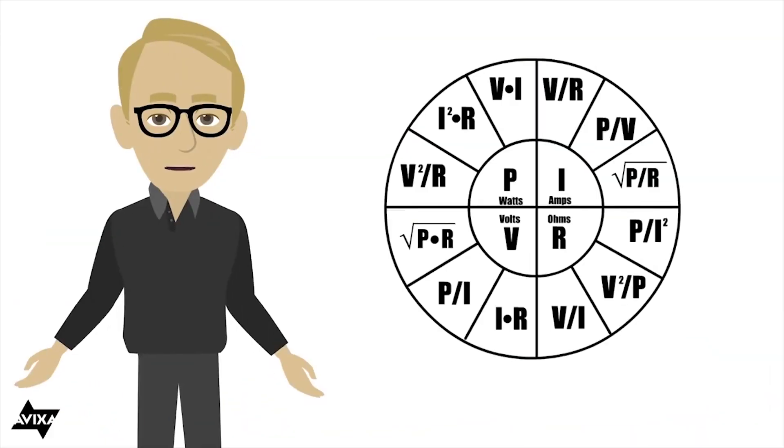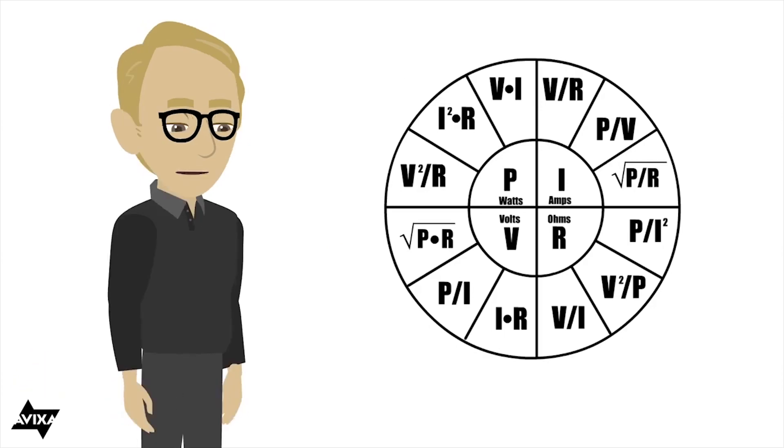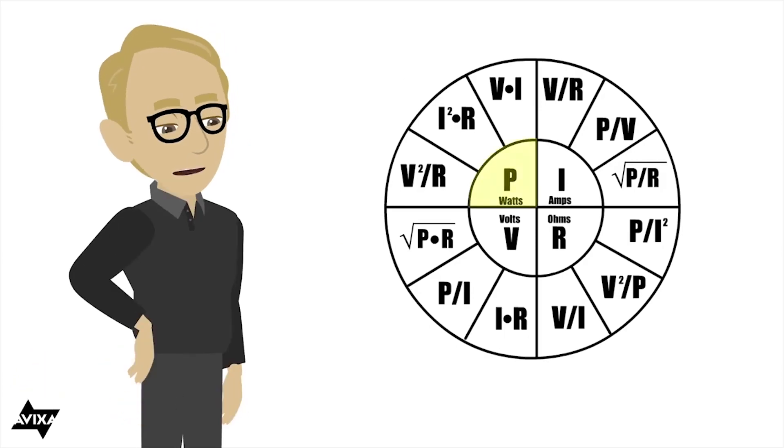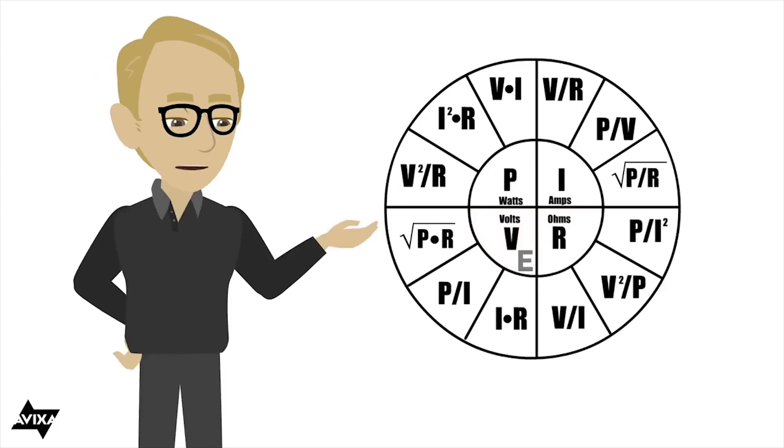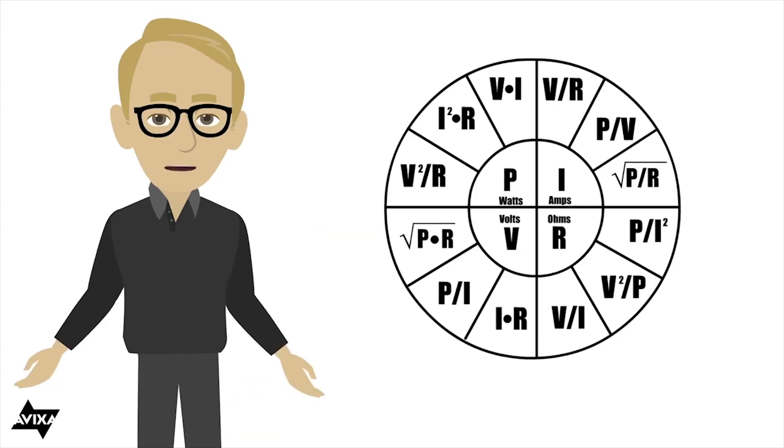This is the formula wheel that we use to solve for electrical equations involving power, current, resistance, and voltage. And the symbols that we're going to see for this, we see P for power, we're going to see I for current, we're going to see R for resistance, and V for voltage. The other symbol that you may see for voltage is going to be E, which stands for electromotive force. So for voltage, depending on what text you read, you can see either V or E.